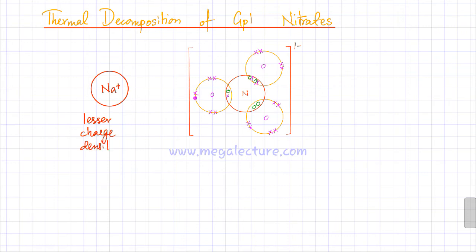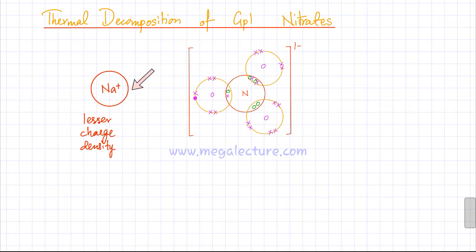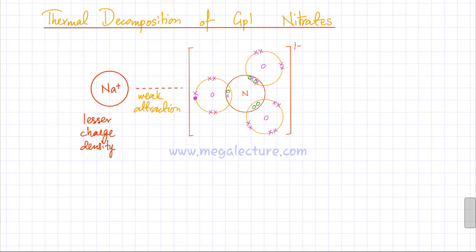If you compare with group 2, which has a charge of 2+, or group 3 with a charge of 3+, their charge density is higher. But group 1 ions only have a charge of +1, which is why the attraction between sodium ions and the nitrate ion is not going to be very strong. There is very weak attraction between sodium ions and nitrate ions, and the polarizing effect of sodium ions is very weak — so nothing much happens to the nitrate ion.